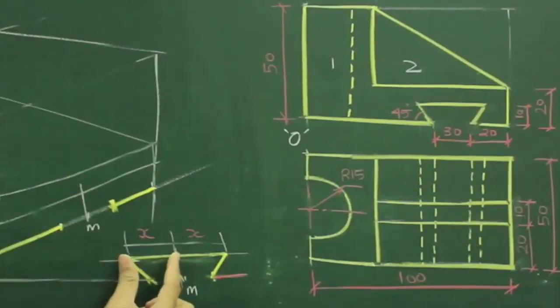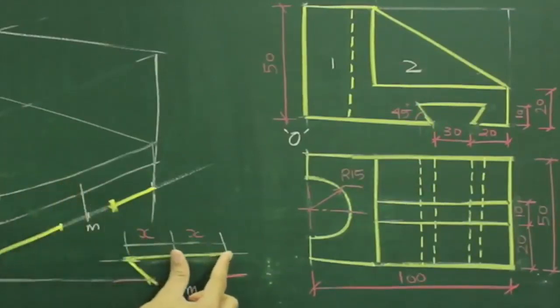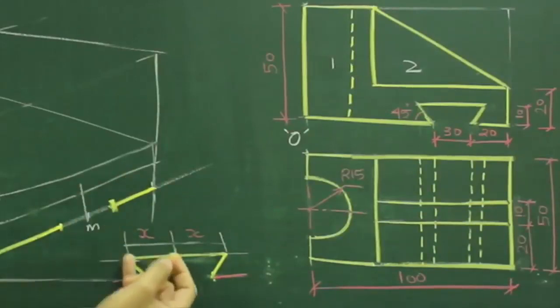Now I will transfer distance x. I'm transferring the linear distance. By transferring this distance x, we'll get the dovetail slot.